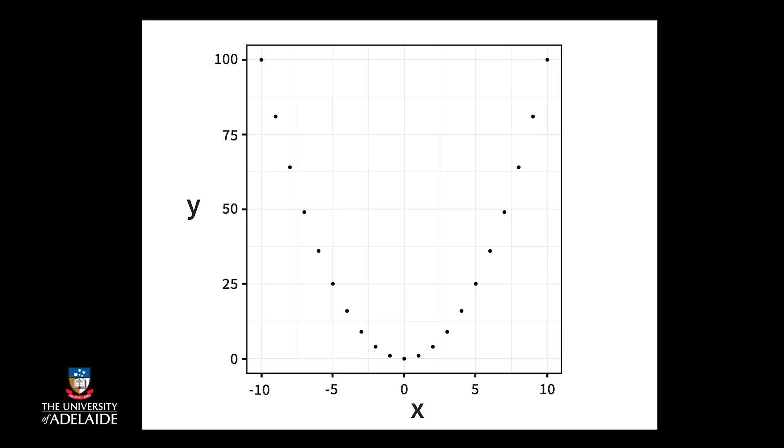Always be careful using the correlation on its own. It should only be used with a scatter plot. For example, take a look at this scatter plot. It has a definite relationship, which is very strong, but it has a correlation of 0.